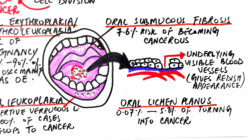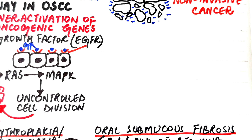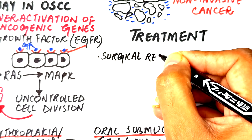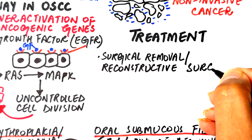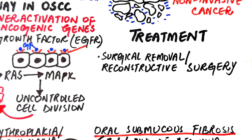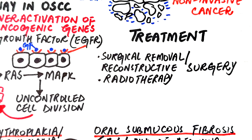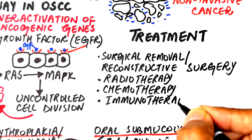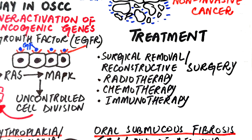Managing oral squamous cell carcinoma requires a multi-pronged approach. The first step is often surgical removal of the tumor along with a margin of healthy tissue to ensure complete excision. In many cases where large areas are removed, reconstructive surgery using flaps or grafts is needed to restore function and appearance. Radiotherapy is commonly used post-surgery to destroy remaining cancer cells, and in more advanced cases it is combined with chemotherapy. Immunotherapy — one of the newest and most promising treatments — uses drugs that help the immune system recognize and attack cancer cells by blocking immune checkpoints that the tumor uses to hide.